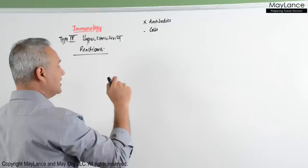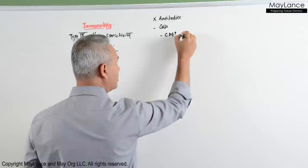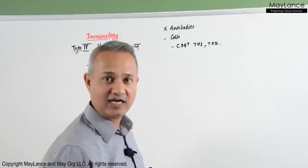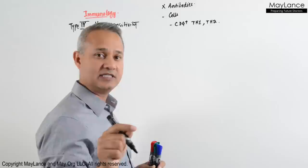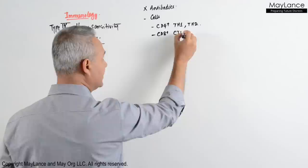Within the cells, the kinds that participate — and these are all USMLE question targets — are CD4 positive, both T helper 1 and T helper 2. Students often know T helper 1 but forget that T helper 2 also participates in type 4 hypersensitivity. Then there are CD8 positive cells, that is CTL or cytotoxic T lymphocytes.